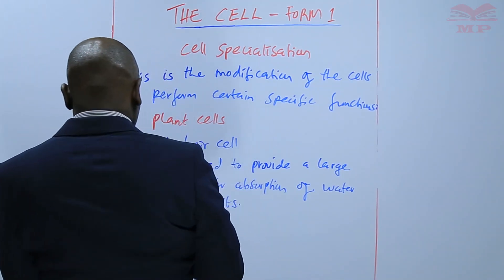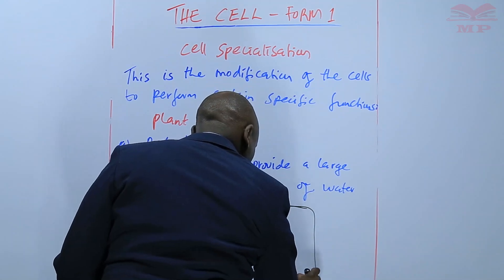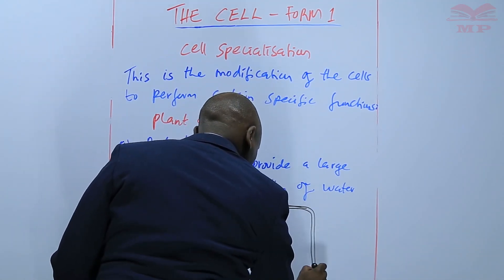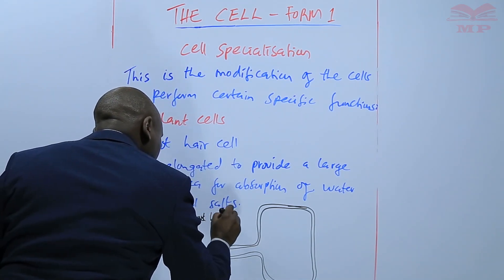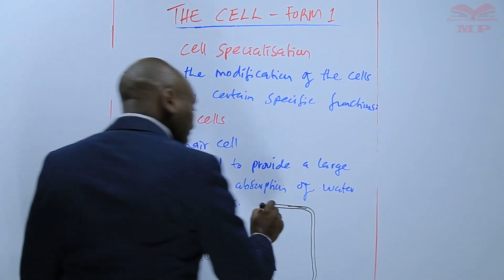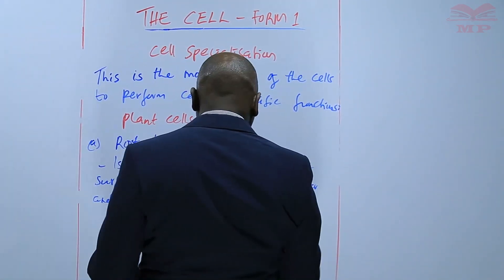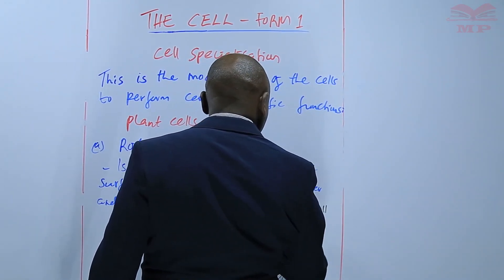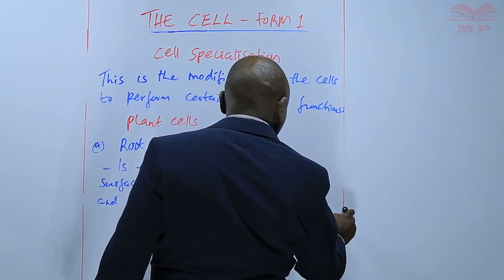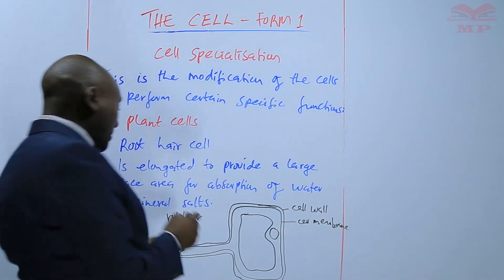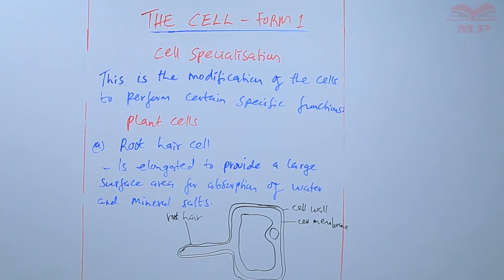A root hair cell will look like this. This is the root hair that is elongated to provide a large surface area for the absorption of water and mineral salts. The other parts are there — the cell wall, the cell membrane, and so on. But our main emphasis is on the root hair that is elongated to provide a large surface area for absorption of water and mineral salts.